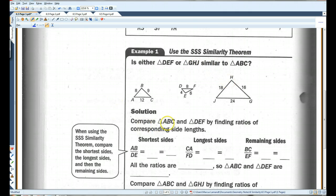What we need to do is compare triangle ABC and triangle DEF by finding the ratios of the corresponding side lengths. So, AB over DE: AB is 8, DE is 4. This simplifies to 2 over 1. CA is 12, FD is 8. If you simplify that, divide by 4, you get 3 over 2.